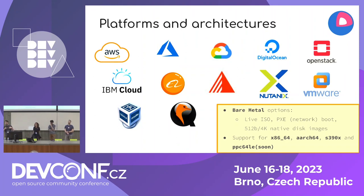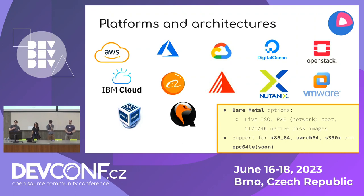Fedora CoreOS itself is available on a lot of platforms, a lot of architectures, a lot of cloud platforms. We have support for almost four architectures right now: x86 of course, ARM64, S390X, and PowerPC coming real soon.